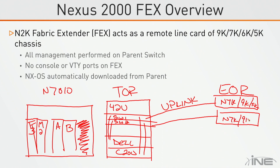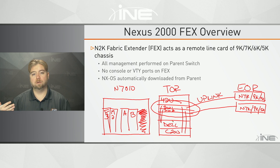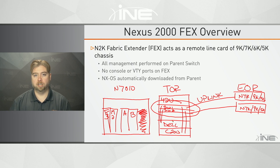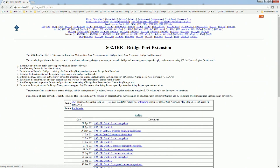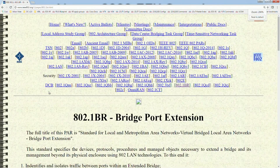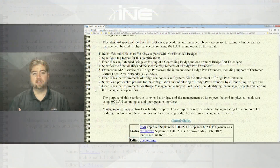From a management point of view, fabric extenders don't directly control the configuration of southbound server connections. There's no console port; you don't Telnet or SSH into them directly. You connect to the parent switch, such as the 5k, and over a custom management protocol running between the parent and the child switch, all configuration is pushed down. This comes from the standardization that is 802.1BR, which is Bridge Port Extension — the Nexus 2k is Cisco's proprietary implementation of this.